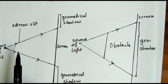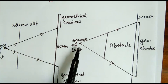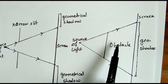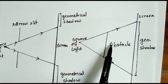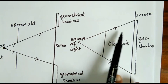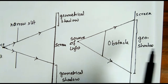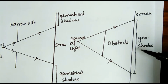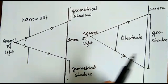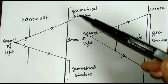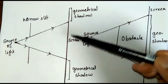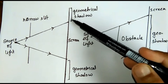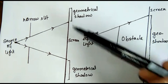This narrow slit is your obstacle. But when you pass the light through a larger obstacle, the shadow formed on the screen is the geometrical shadow. In this case, the shadow is formed in two parts — this is the remaining part of the screen, and the geometrical shadow is formed here.